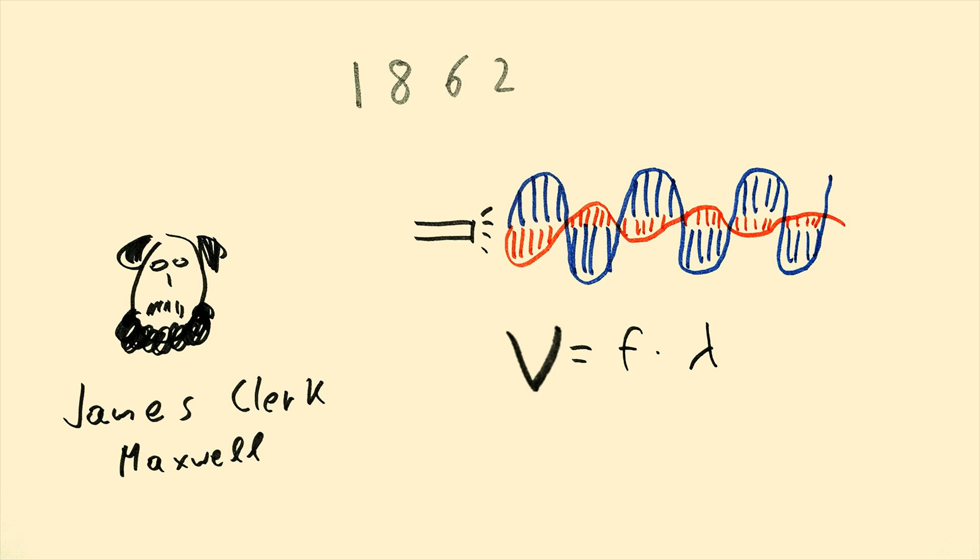The speed by which it travels through space is the product of its frequency and its wavelength. So all we had to do is measure the frequency and the wavelength of a beam of light, and multiply them together. And that's exactly what we did.